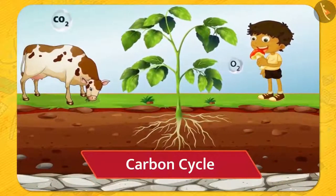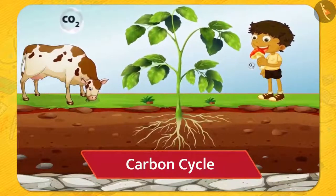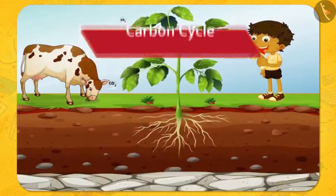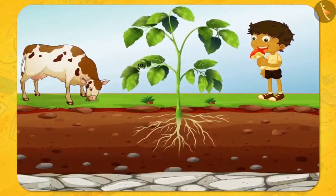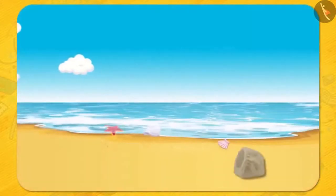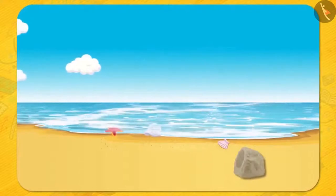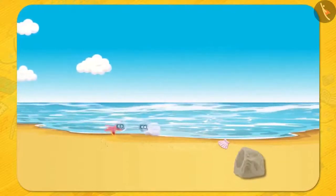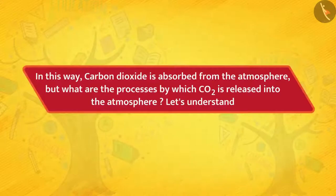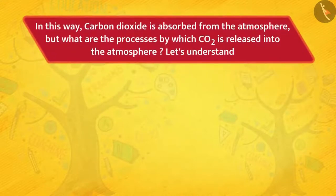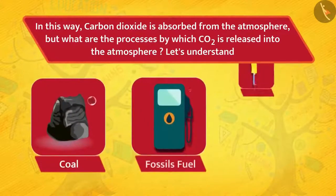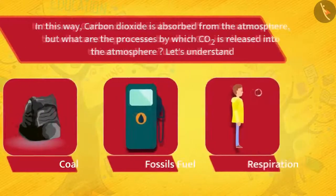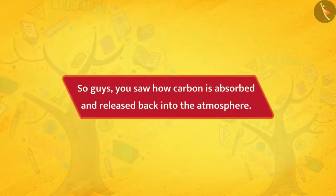Trees absorb carbon dioxide present in the atmosphere and prepare their food by the process called photosynthesis. Apart from this, marine animals also absorb carbon dioxide dissolved in water and make their own shells. In this way, carbon dioxide is absorbed from the atmosphere. Carbon dioxide is released into the atmosphere by respiration and burning of fossil fuels and coal. So, you saw how carbon is absorbed and released back in the atmosphere.